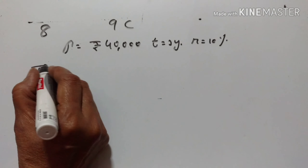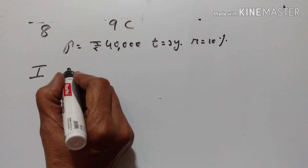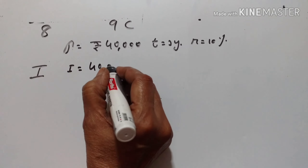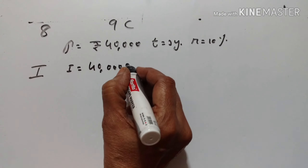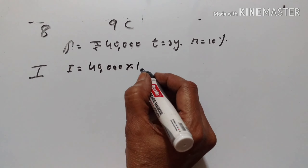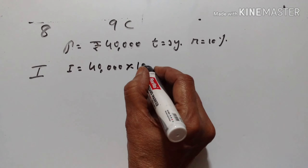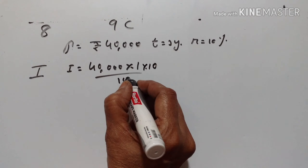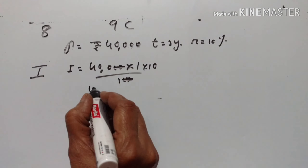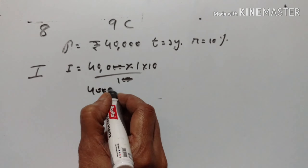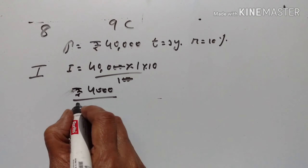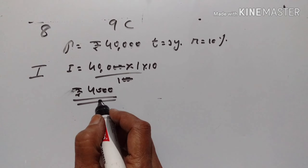For the first year, the interest is equal to P into T for one year into R upon 100. Let's calculate for one year — Rs. 4,000. Rs. 4,000 is the interest for the first year.